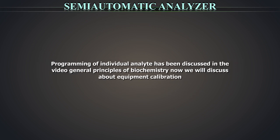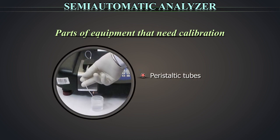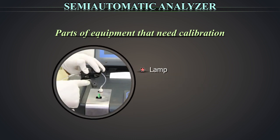Programming of individual analytes has been discussed in the video on general principles of biochemistry. Now we will discuss equipment calibration. Parts of this equipment that need calibration: the peristaltic tubes can grow weak and lose their elasticity over time. The pump that aspirates may go weak and may need readjustment. The lamp inside has a specified life, generally 2000 hours. If you are using your equipment for 4 hours a day, the lamp will need replacement in 500 days, which is less than 2 years. The cuvette or the flow cell will get dirty and will need to be cleaned or replaced. The filters also have a specified life and also require change.